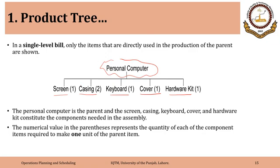The numerical values in parentheses represent the quantity of each component item required to make one unit of the parent. To make a personal computer, we need one screen, two casings, one keyboard, one cover, and a hardware kit. There is only one level shown after the parent. Sub-components such as those of the keyboard or hardware kit are not shown — we have stopped at the first level. This is called a single level bill of material.